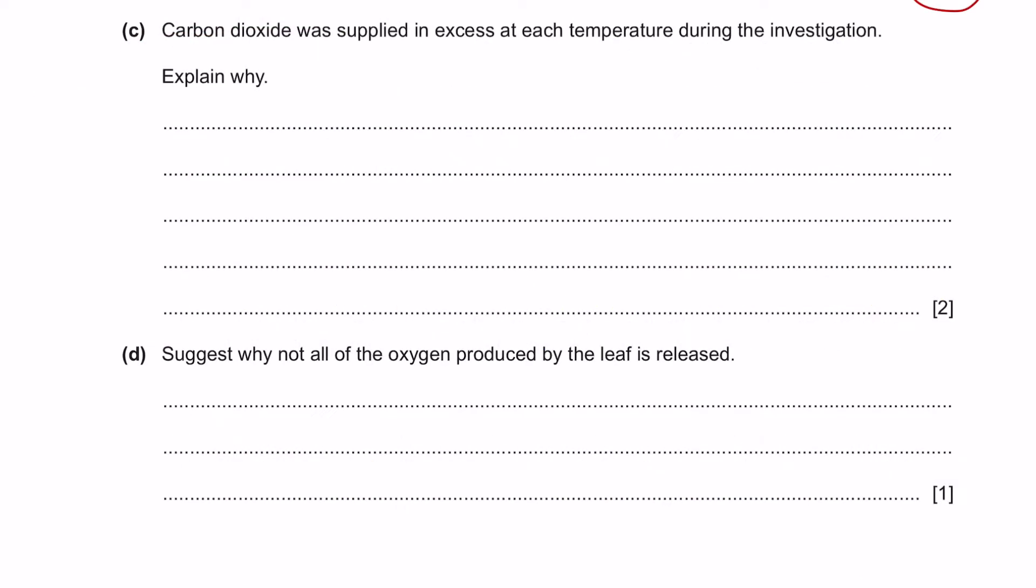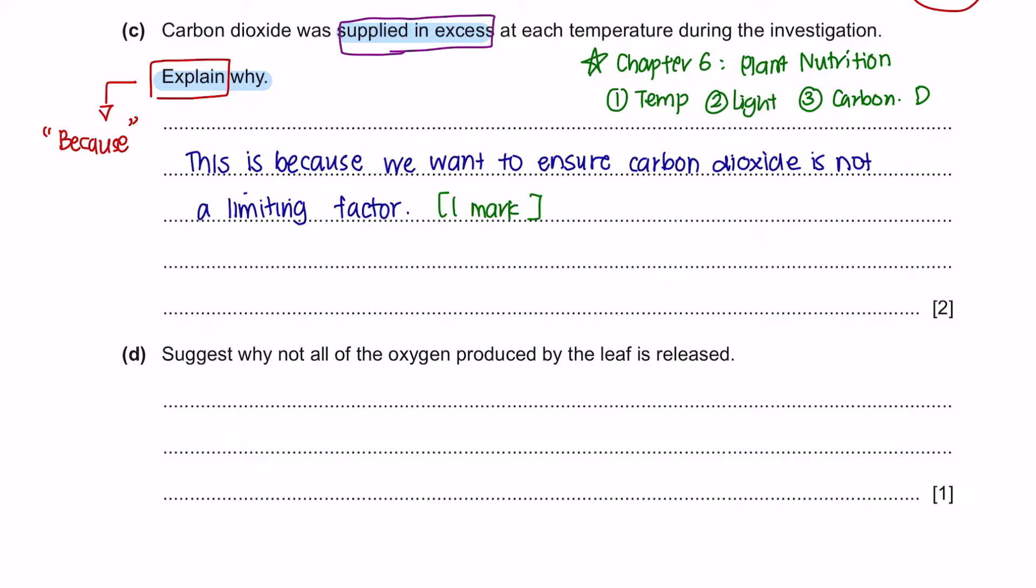Next, question C. Carbon dioxide was supplied in excess at each temperature during the investigation. Explain why. Again, the command word is explain. You can use the keyword because to help you explain your reasons. In chapter 6 of plant nutrition, you will learn about limiting factors. There are three main factors which limit the rate of photosynthesis: temperature, light intensity, and carbon dioxide. The reason why carbon dioxide was supplied in excess is because we want to ensure that carbon dioxide is not a limiting factor. Saying this will only provide one mark. Since we are discussing limiting factors, by ensuring carbon dioxide is not the limiting factor, you can make temperature the limiting factor.